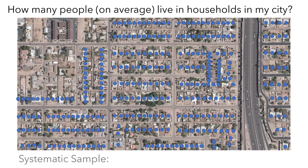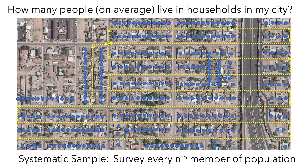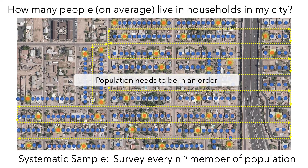One method is a systematic sample, where you put all members of the population in order and survey every nth member. For example, you could come up with a route through all the streets in the city and select every 10th household you walked by. This should produce a sample as representative as a simple random sample, and it doesn't necessarily require starting with a list of the entire population. However, it does require that your population is in some sort of order — not every scenario has a built-in order like this.